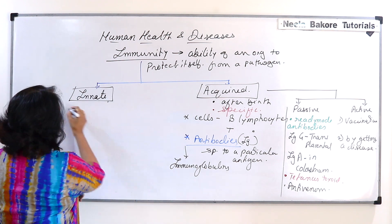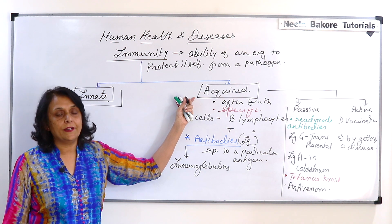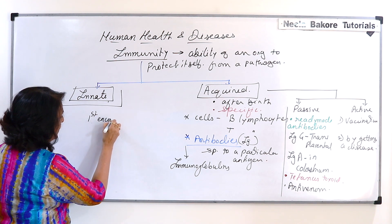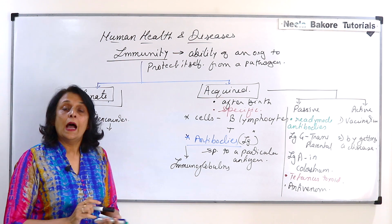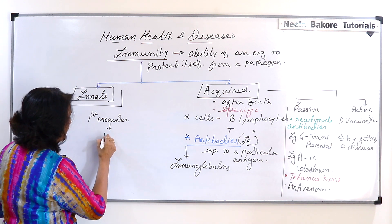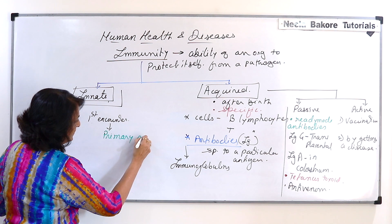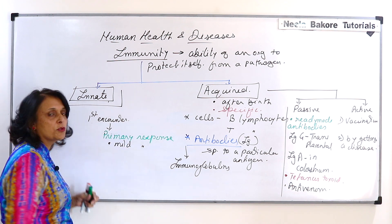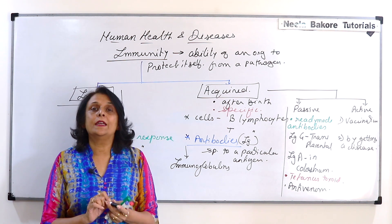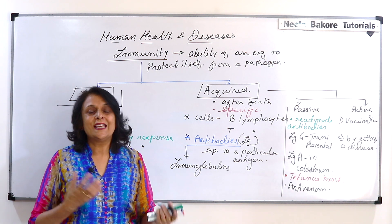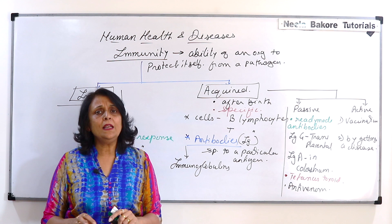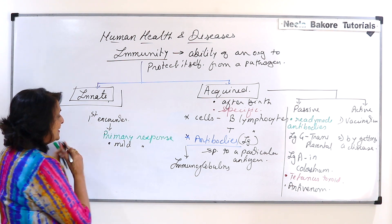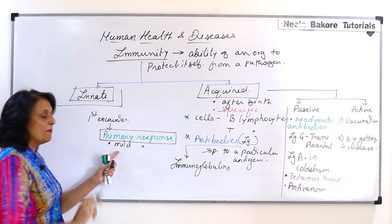Now what happens when a pathogen enters our body in the context of acquired immunity? The first encounter with the pathogen generates a mild response in our body — this is called the primary response. The primary response is mild, meaning there can be a mild fever, sometimes diarrhea, sometimes a little rash on the body, but everything is mild. Two, three, four days and everything is fine. This first encounter is called the primary response — it is a milder, slower response.